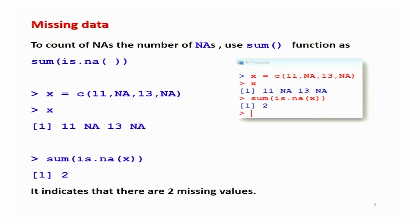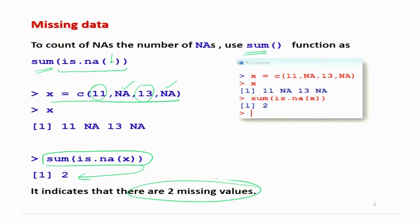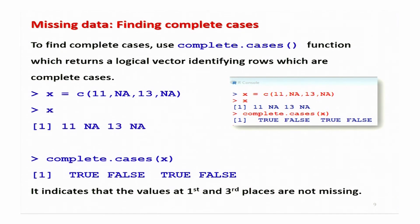To count how many values are missing in a data vector, use sum(is.na(x)). For the vector x with NA at the 2nd and 4th positions and values 11 and 13 at the 1st and 3rd positions, sum(is.na(x)) returns 2, indicating there are two missing values in x.